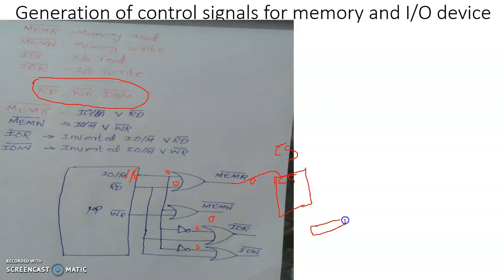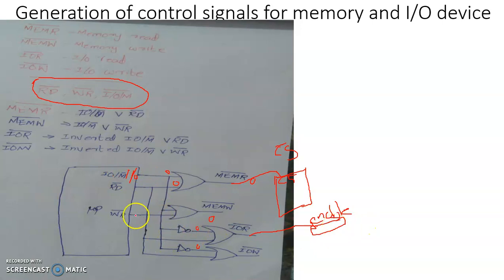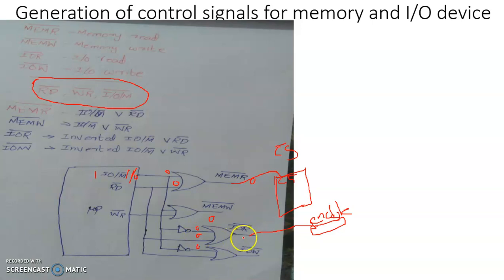Suppose the processor is performing an IO read operation. The IO device concerned must be enabled, so it will be supplied with an active-low chip-enable signal. This enable signal will be generated by the logical OR operation of RD̄ and the negated IO/M̄ line. When the IO device is being addressed, the IO/M̄ line has content one, which is negated here to make it zero.